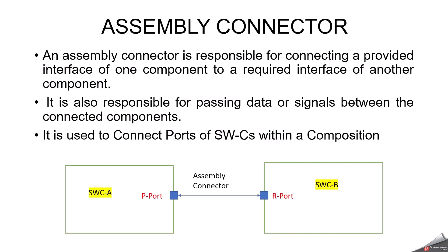Now let's discuss about assembly connector. You can see we have a P-port in one software component and an R-port in another software component. To make a communication between these two software components, we have to connect the P-port with the R-port — P means provider port, R means receiver port. It is also responsible for passing data or signals between the connected components. It is used to connect ports of software components within the composition, because components will be placed inside the composition.